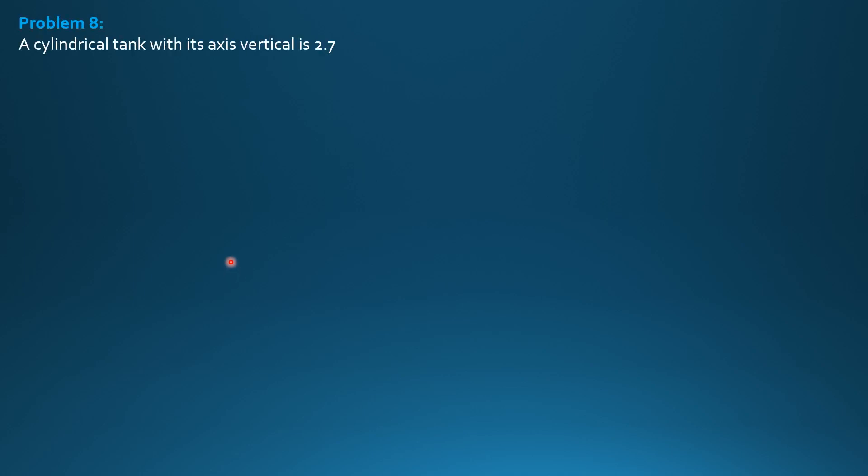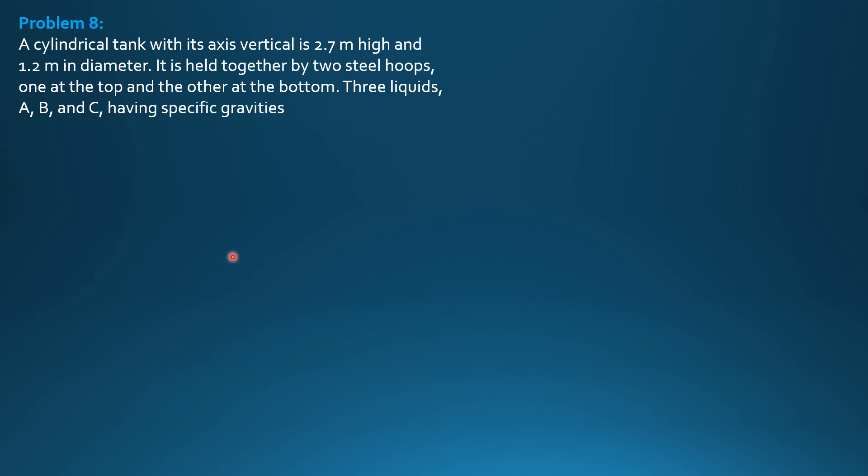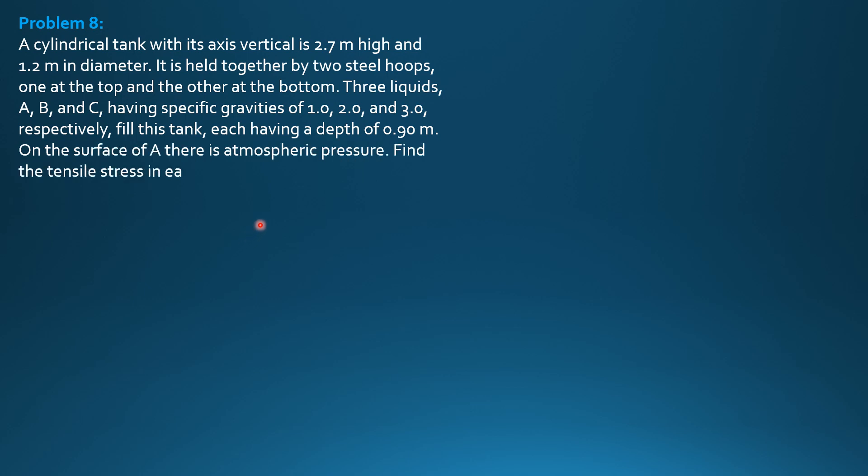A cylindrical tank with its axis vertical is 2.7 meters high and 1.2 meters in diameter. It is held together by two steel hoops, one at the top and the other at the bottom. Three liquids, A, B, and C, having specific gravities of 1, 2, and 3, respectively, fill this tank, each having a depth of 0.9 meter.